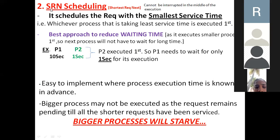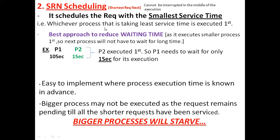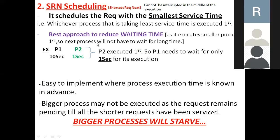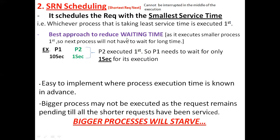SRN scheduling schedules the request with the smallest service time. In the given table, you need to observe the service times of the processes. By seeing the service time, find the smallest service time — the process having the smallest service time will be scheduled first and executed first. Whichever process is taking the least service time will be executed first. SRN scheduling is the best approach to reduce the waiting time, because it executes smaller processes first, so the next process need not wait for a longer amount of time.